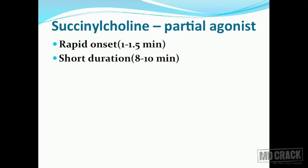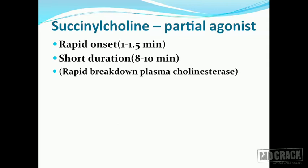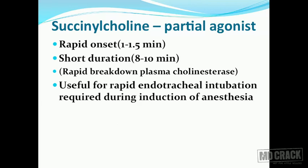Succinylcholine is a partial agonist, and cholinesterase enzymes in the plasma as well as in the tissues are there to destroy succinylcholine. This gives a very rapid onset of action - within 1 to 1.5 minutes the action begins - and a very short duration of action of 8 to 10 minutes, due to rapid breakdown by plasma cholinesterase. This makes succinylcholine a beautiful drug: starting its effect within 1 to 1.5 minutes and ending within 8 to 10 minutes. This is why it is an ideal agent for rapid endotracheal intubation during the induction of anesthesia.